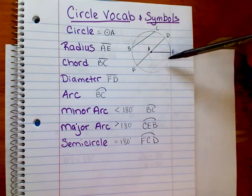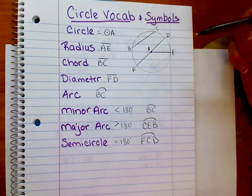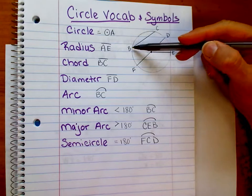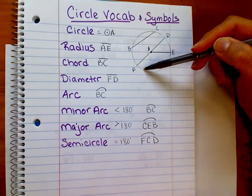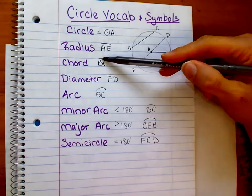Make sure you always use capital letters for points. We never use lowercase letters. A chord is a line segment where both endpoints are on the circle. So BC, our chord, we would write BC with a line over it.